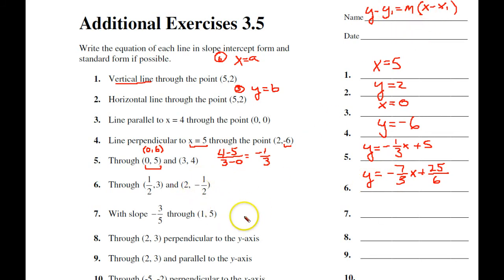But let's use that formula up there now for number 7. Here we have y minus this 5 equals our slope a negative 3 fifths times x minus 1. So, once I have it in point-slope form, my 1 goes there, my 5 goes there. There's my slope.